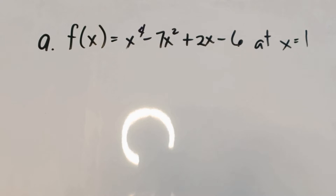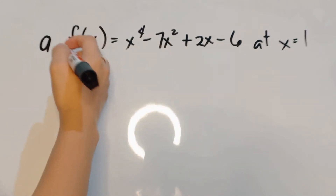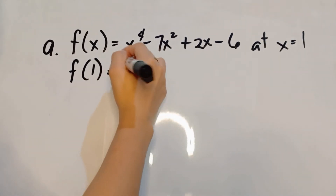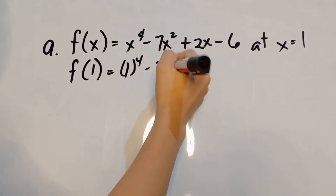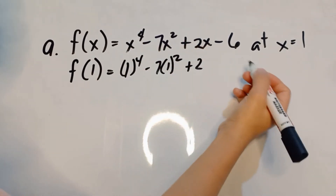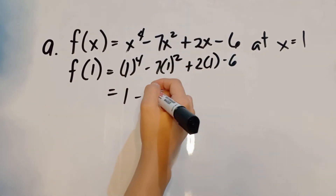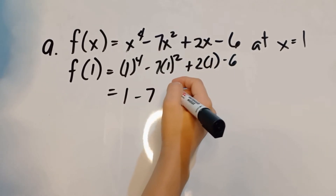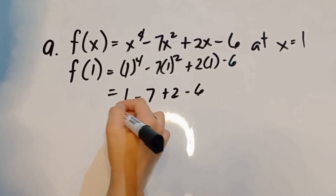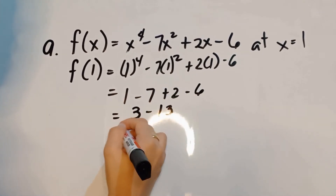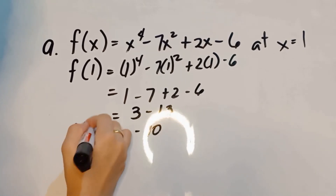Let us evaluate f(x) equals x to the fourth minus 7x squared plus 2x minus 1 at x equals 1. Substituting all values of x as 1: f(1) equals 1 to the fourth minus 7 times 1 squared plus 2 times 1 minus 6. This gives 1 minus 7 plus 2 minus 6. Adding like terms we get 3 minus 13, which is negative 10. That is your final answer.